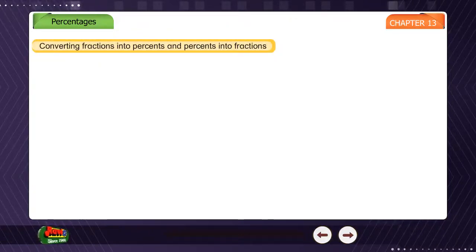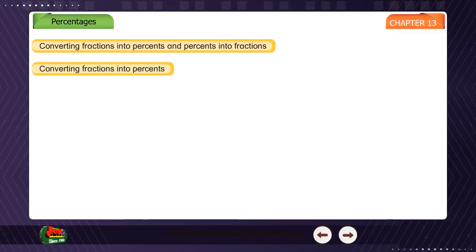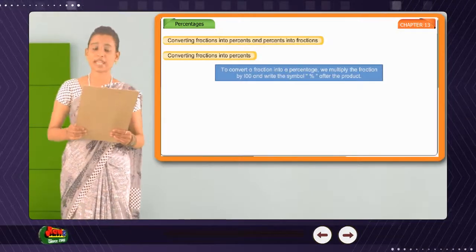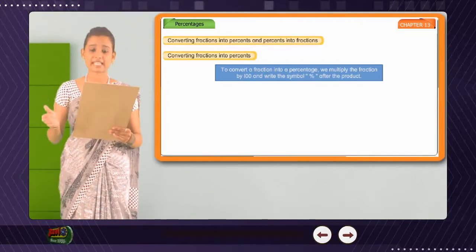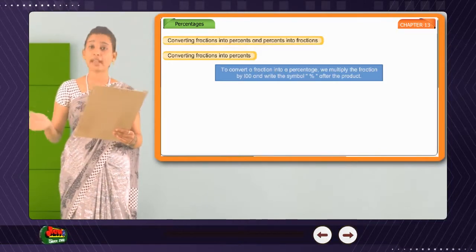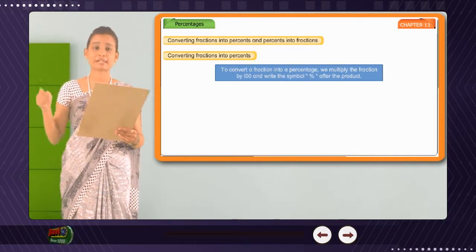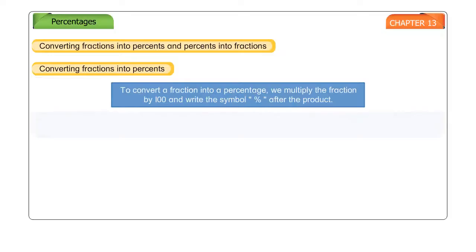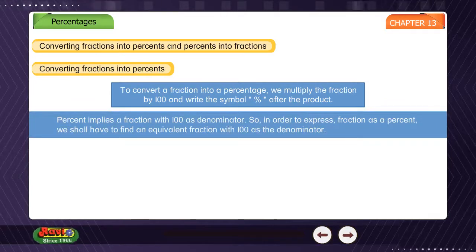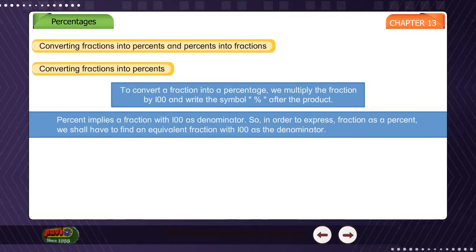Converting fractions into percents and percents into fractions. To convert a fraction into a percentage, we multiply the fraction by 100 and write the symbol percent after the product. Percent implies a fraction with 100 as denominator. So, in order to express a fraction as a percent, we shall have to find an equivalent fraction with 100 as the denominator.